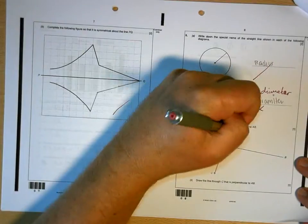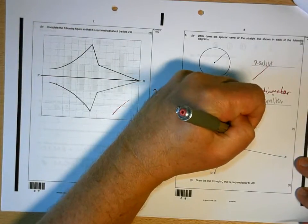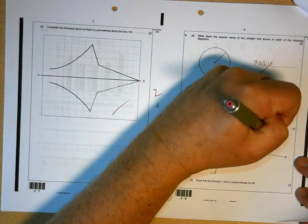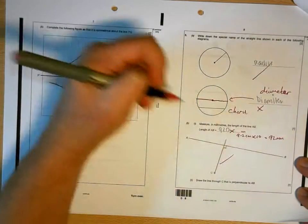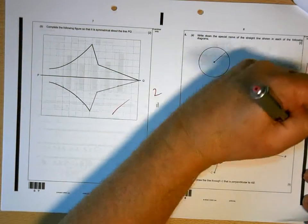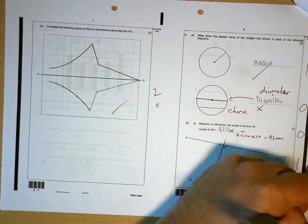920mm, no. It's 9.2cm, which you times by 10 to make 92mm. That one's good. So 1, 0, 0, 1, 4 for the page.